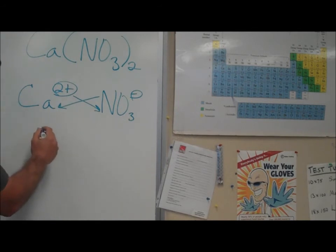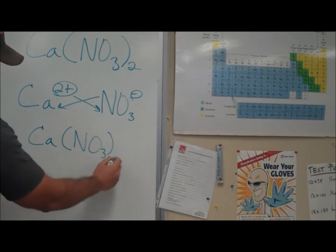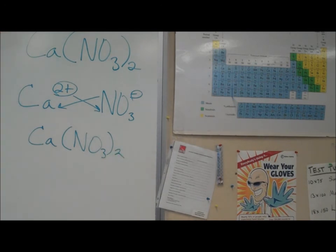It will be written as such: CA parenthesis NO3 close parenthesis two. This means that you need one calcium atom and two nitrate polyatomic ions.